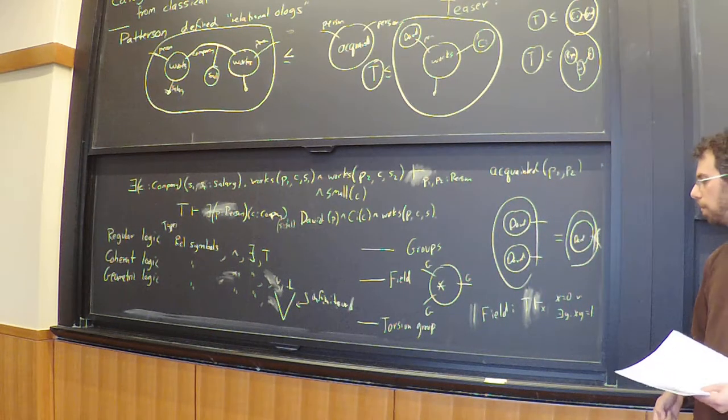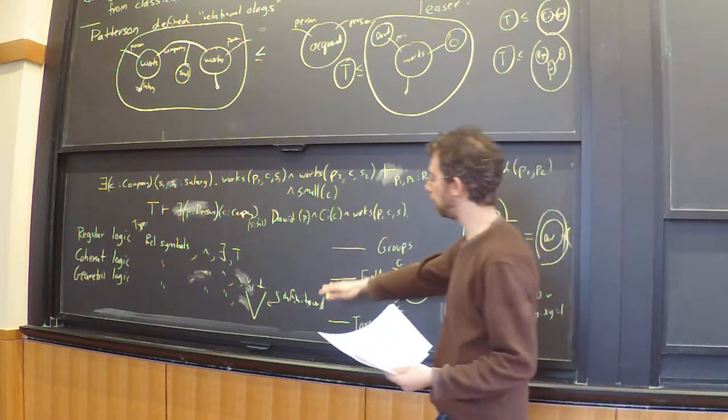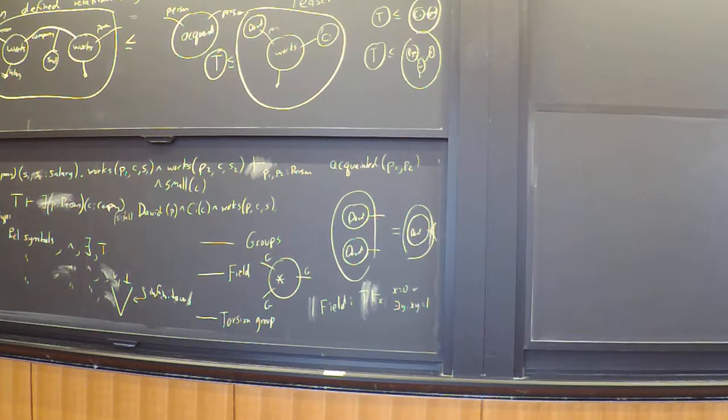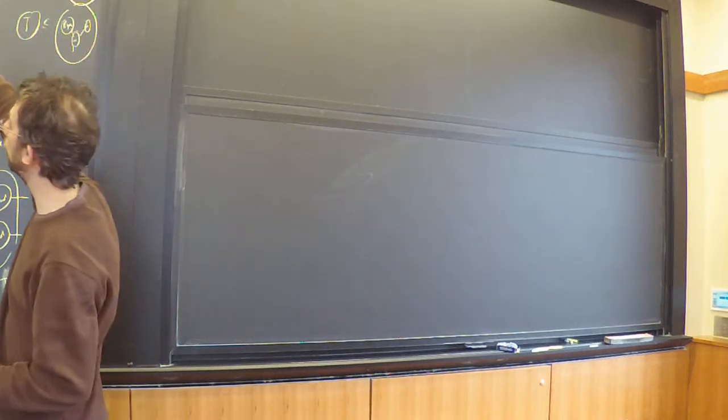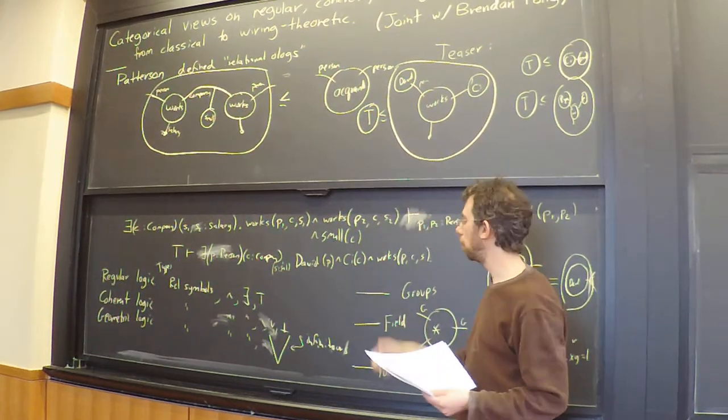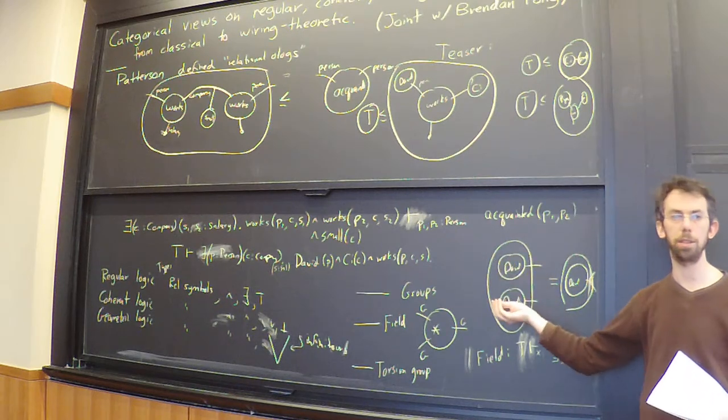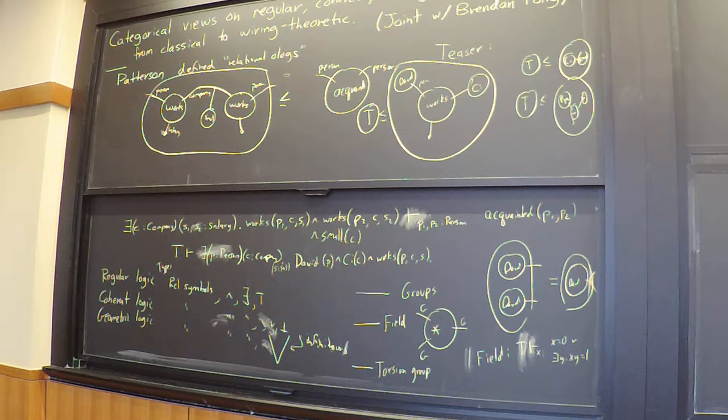In geometric logic where I can do infinite ors, I can say things like torsion group, which says that for every element of this group, either it or it squared or it cubed or to the fourth power is one. So for different powers of theory you need different powers of logic. Today I want to connect those to wiring theoretic theory. We're going to focus on regular.